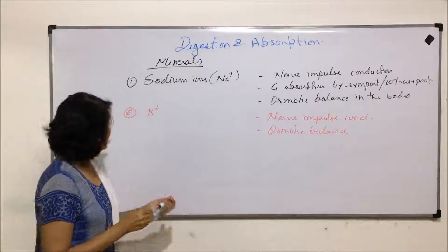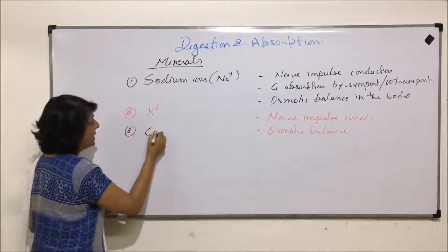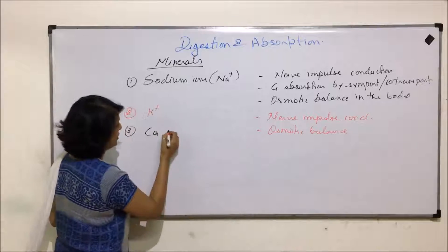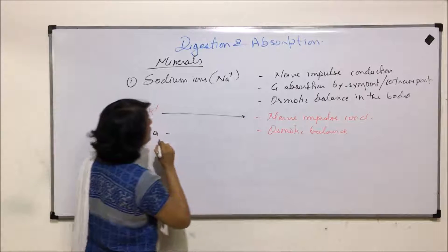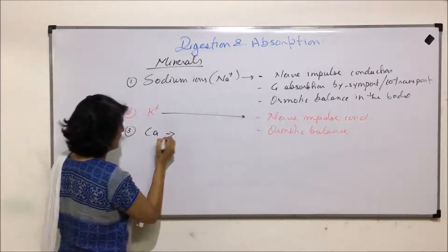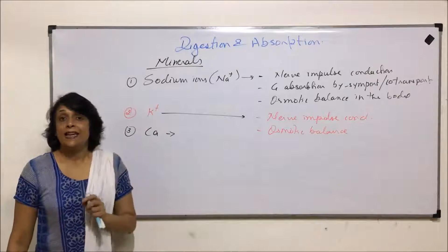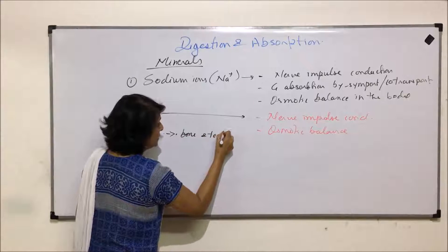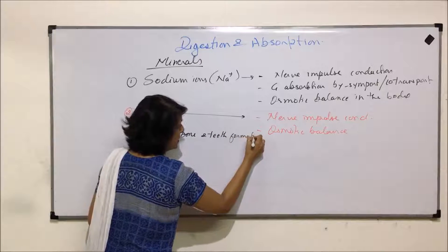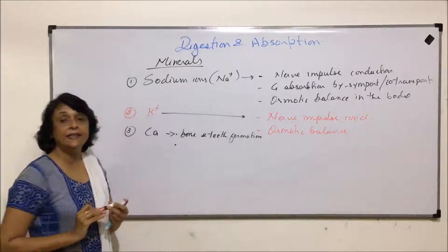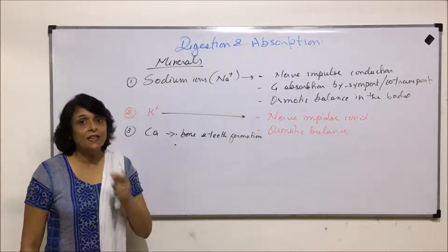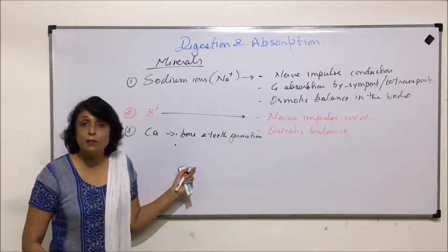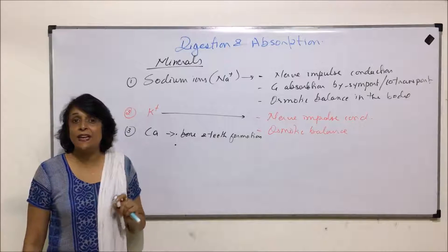The next mineral is calcium. We need calcium ions for performing various functions. Calcium is essential for bone and teeth formation. Calcium ions are also essential in nerve impulse conduction — calcium pumps are present in the pre-synaptic membrane.